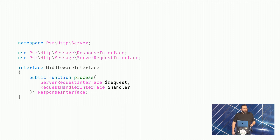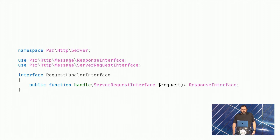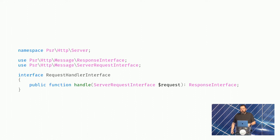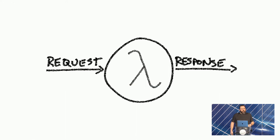The working group decided to not use invoke for the main interface. Instead, the working group decided to use 'process', which would accept a request and a handler for the next thing in the chain, and then return a response object. PSR-15 also included the endpoint of the middleware chain: the request handler interface is sort of what you'd expect to be more like a controller — the thing that happens at the end. It just gets a request and returns a response, with no 'next'.